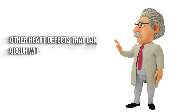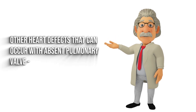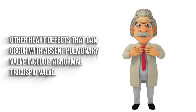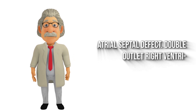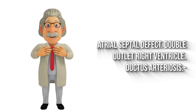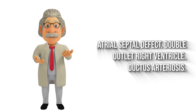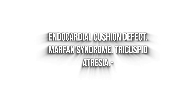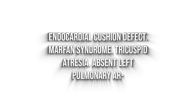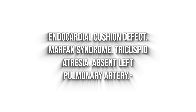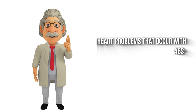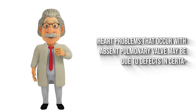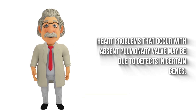Other heart defects that can occur with absent pulmonary valve include: abnormal tricuspid valve, atrial septal defect, double outlet right ventricle, ductus arteriosus, endocardial cushion defect, Marfan syndrome, tricuspid atresia, and absent left pulmonary artery. Heart problems that occur with absent pulmonary valve may be due to defects in certain genes.